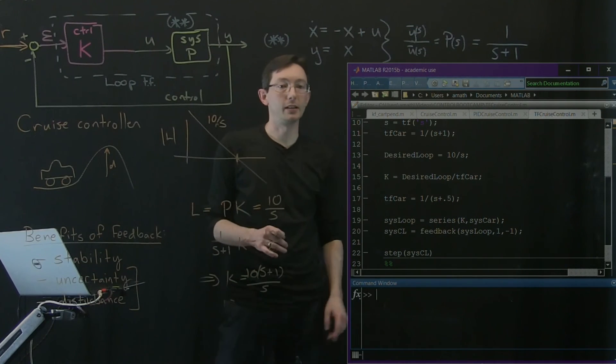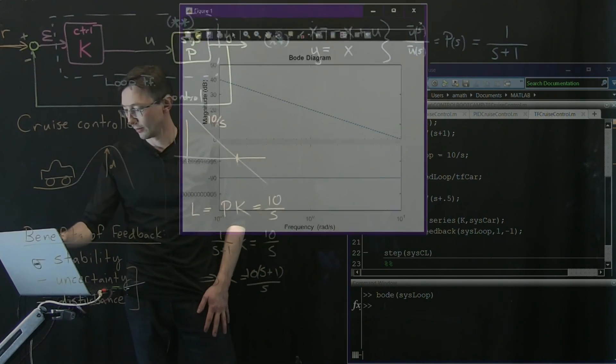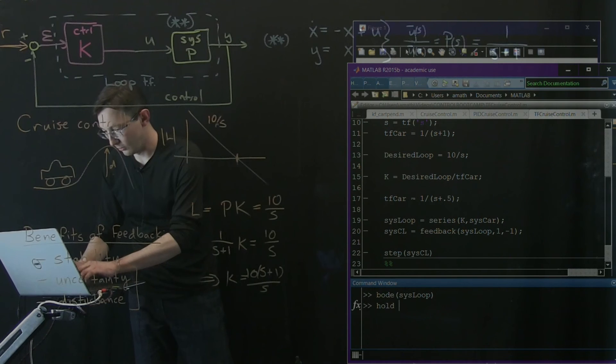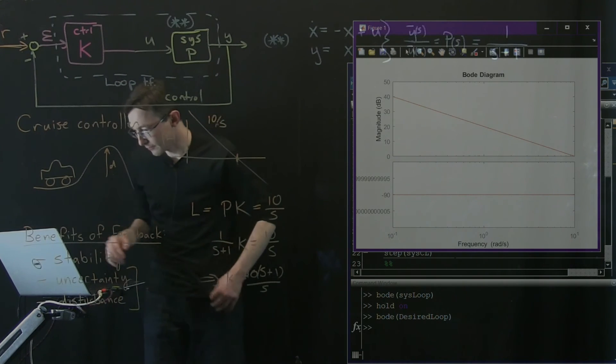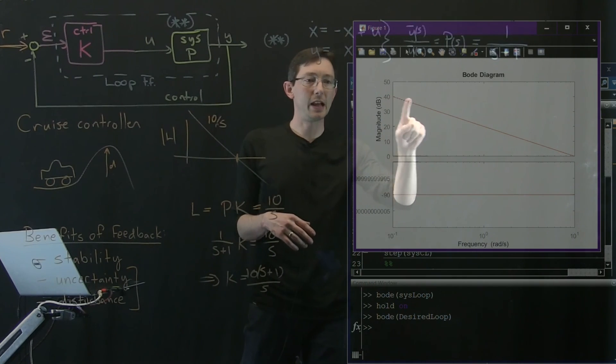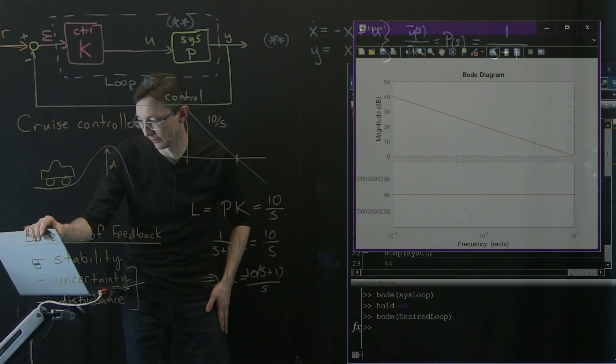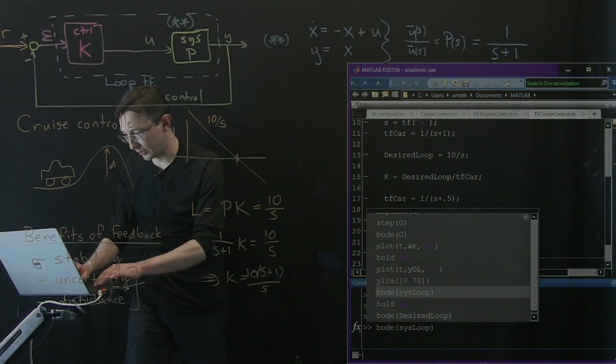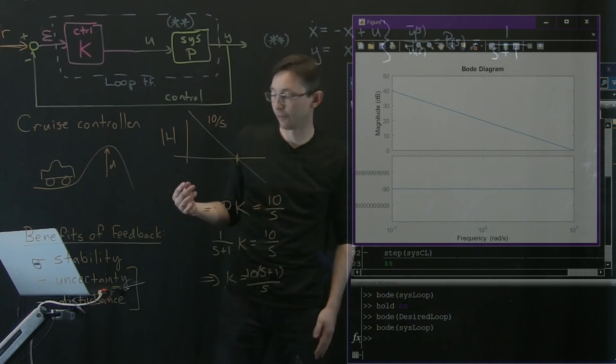And in fact, if I want to look at what the actual system loop is, I can say bode of sysloop. And I'm also going to say hold on and I'm going to bode my desired loop. Well, I think they're on top of each other. But anyway, you see that the desired loop function was this integrator. That's what an integrator looks like in the frequency domain. And my actual system loop is also an integrator.